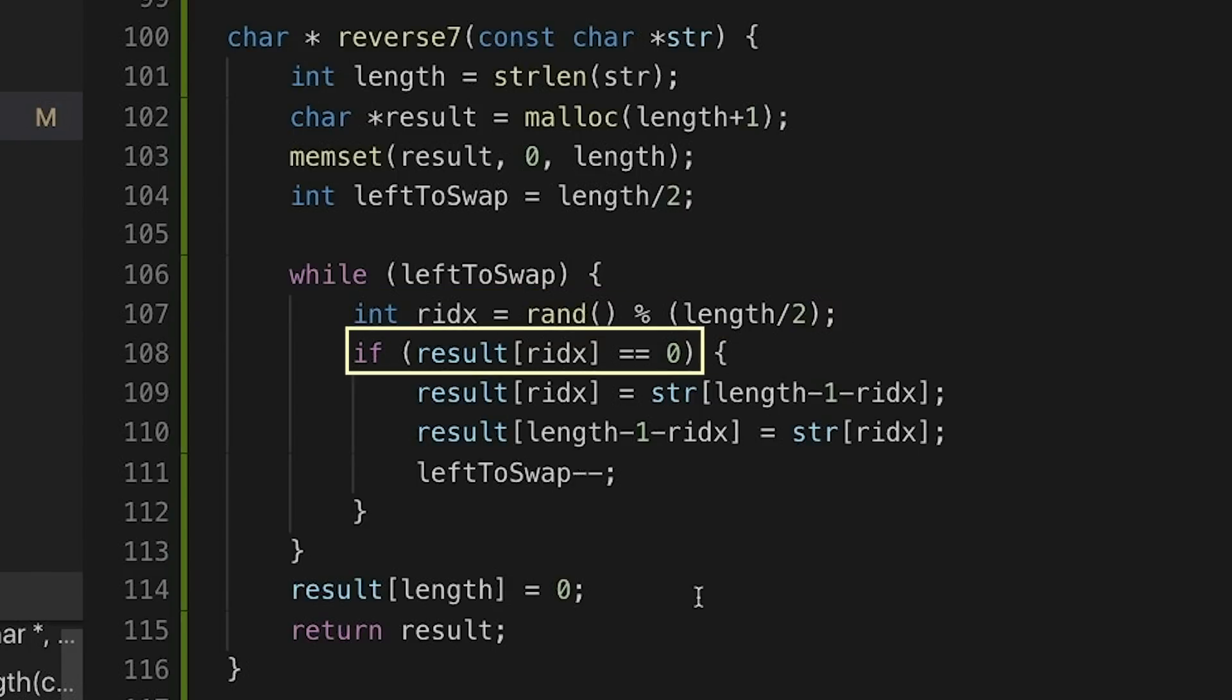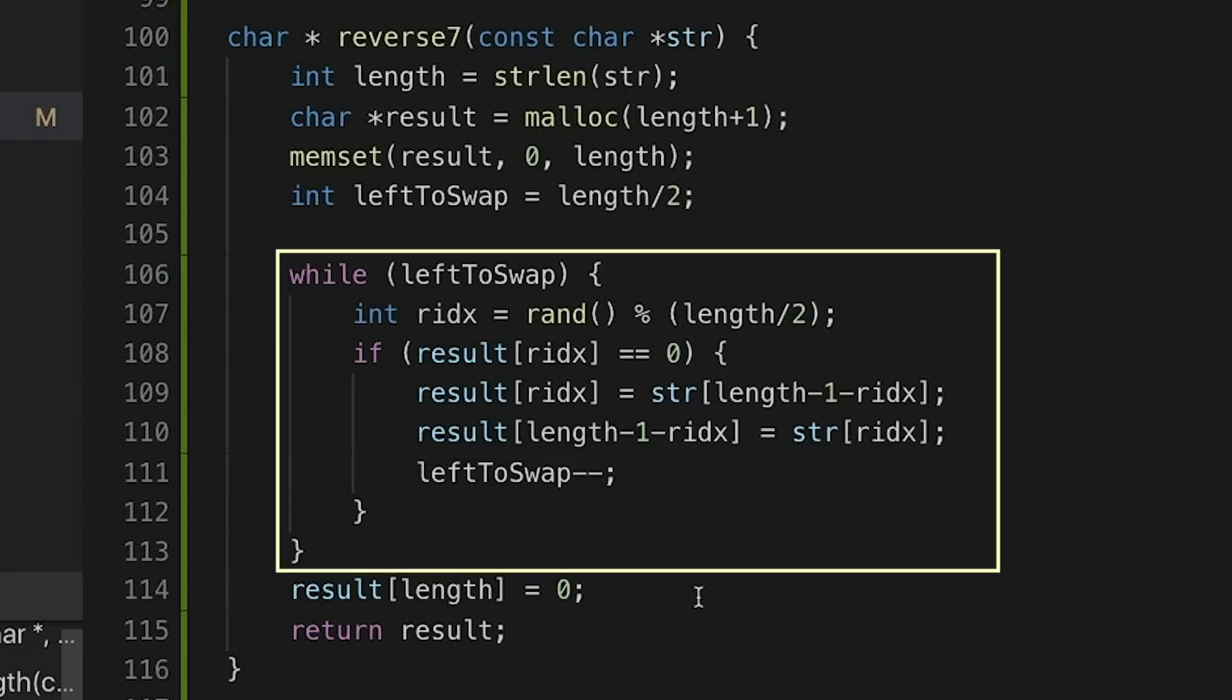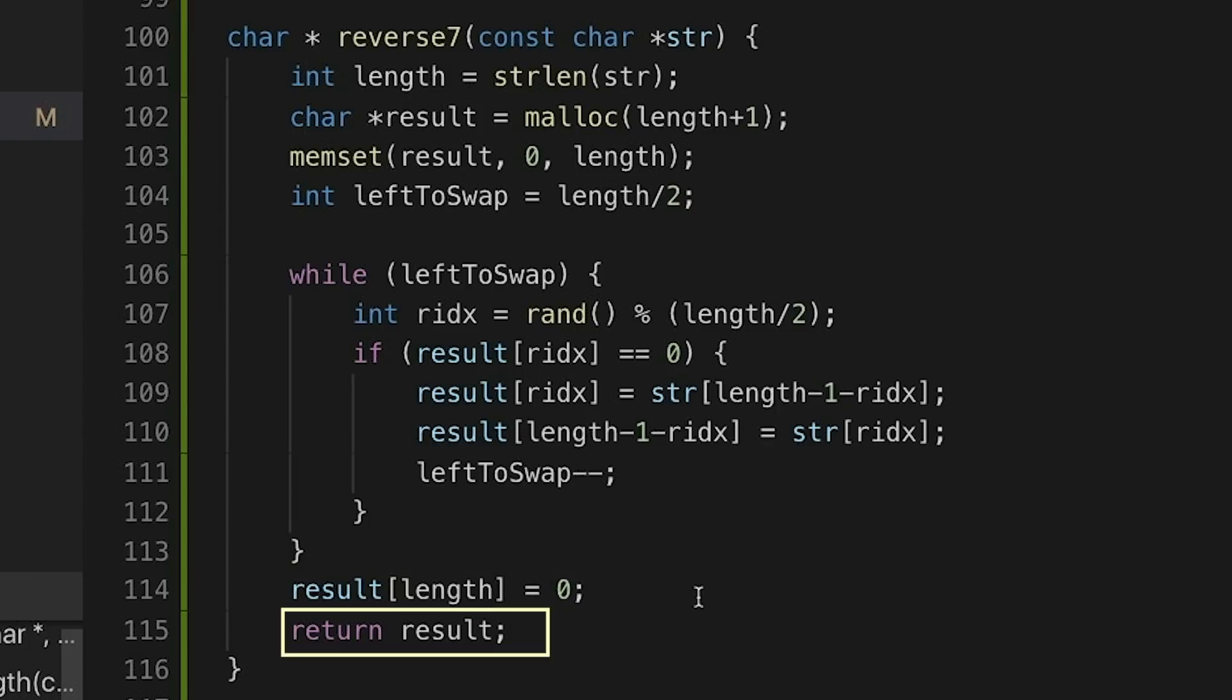Then we check to see if that character in the result is still zero, meaning that we haven't swapped it yet. And if it is, then we swap it and we decrement our left to swap counter. And we keep doing that over and over again until left to swap reaches zero. And then of course, we null terminate the array. And at that point, we're done.